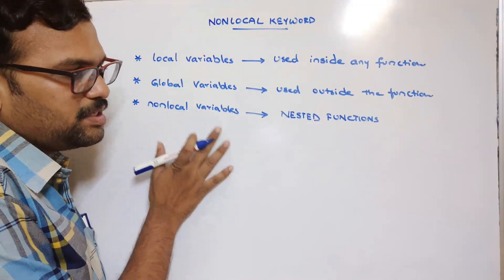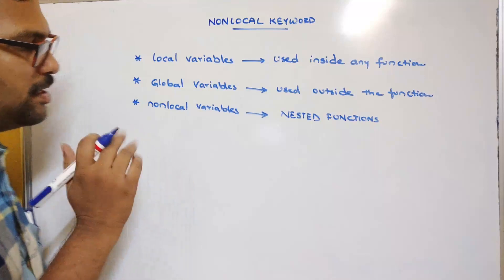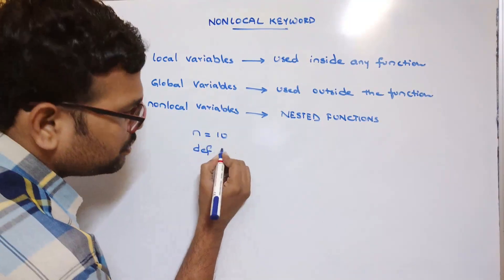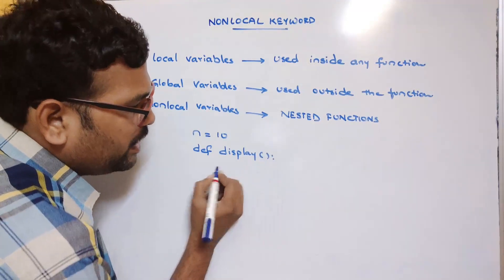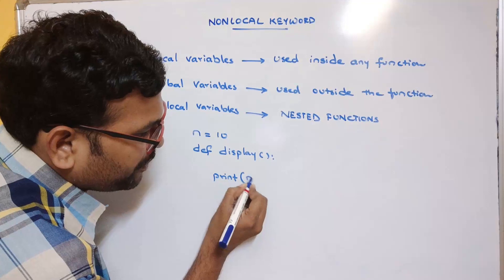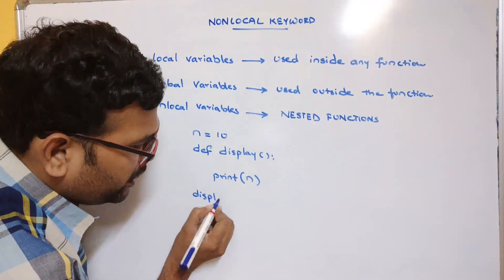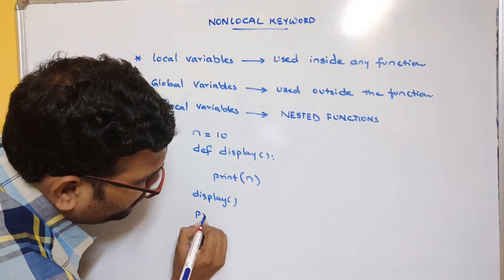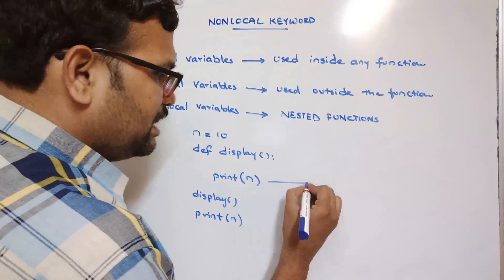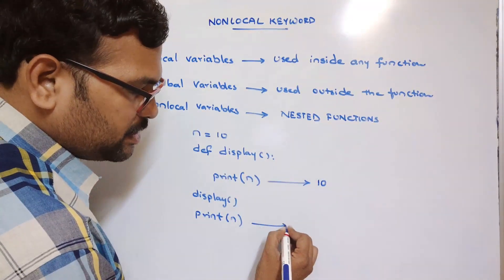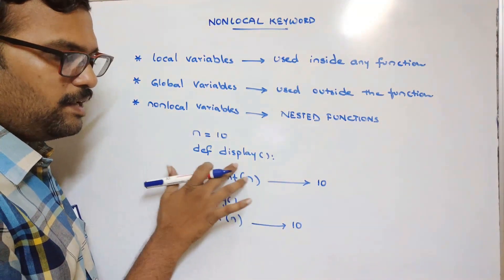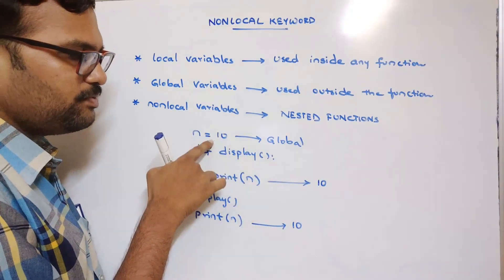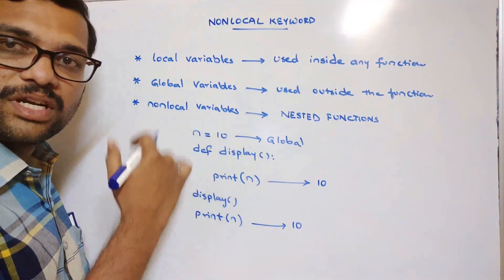Let me explain the importance of non-local variables and then demonstrate with a small program in the interpreter. Consider n = 10, and a display function that prints n. We call the function and also print n outside. Since no variable is declared inside the function, n is treated as a global variable and can be used both outside and inside the function.